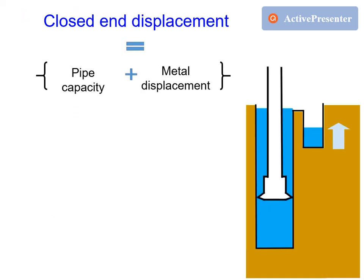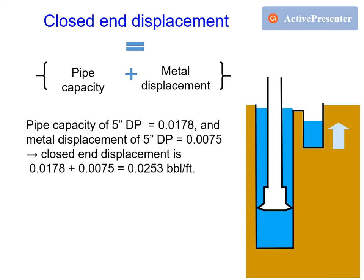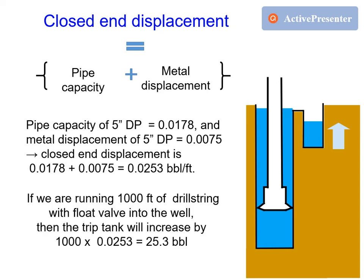Closed end displacement is equal to pipe capacity plus metal displacement. If drill pipe capacity is 0.0178 barrels per foot and metal displacement is 0.0075 barrels per foot, then the closed end displacement is 0.0178 plus 0.0075 equals 0.0253 barrels per foot. If we are running 1,000 feet of drill string with a float valve into the well, then the trip tank will increase by 1,000 multiplied by 0.0253, equals 25.3 barrels.